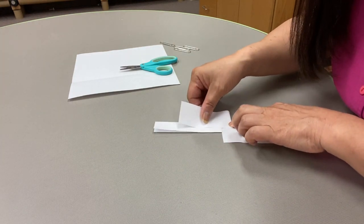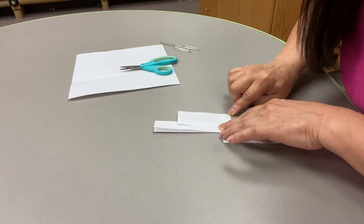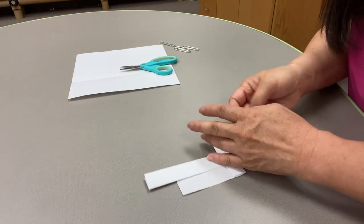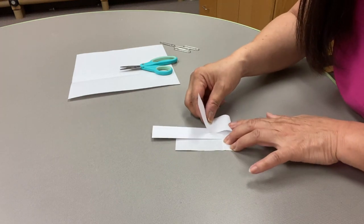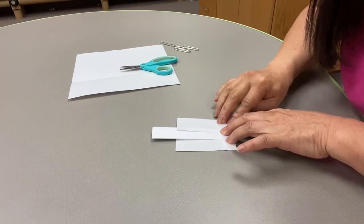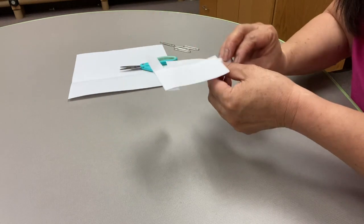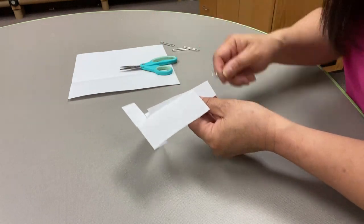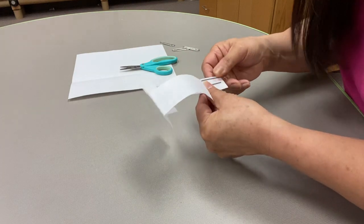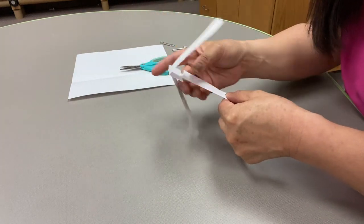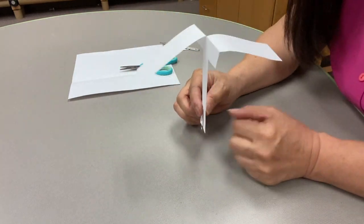Fold one of the rabbit ears down one side. And then flip it over and fold the other rabbit ear down the other side. Put one of the paper clips on the bottom of the handle. And there you have your twirlybird.